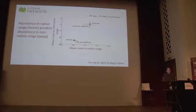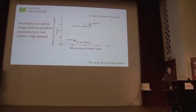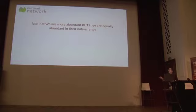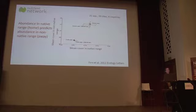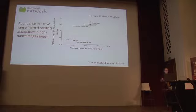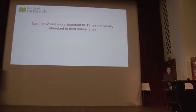Why are non-natives more dominant? Is it because they're doing something new in the non-native range, released from enemies? Or are they just the most dominant species that we tend to transport? Work by Jennifer Fern when she was a postdoc with me in Australia found that abundance in the native range predicts abundance in the non-native range using NutNet data. If you're abundant at home, you'll be abundant away. So they're doing the same thing in their non-native range as in their native range, which means if we know the ecology at home, we can predict what it will do when taken away.